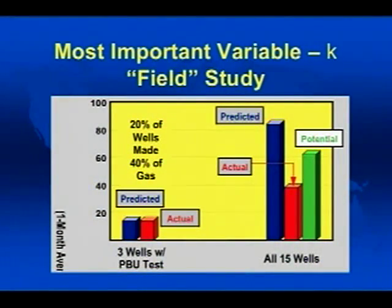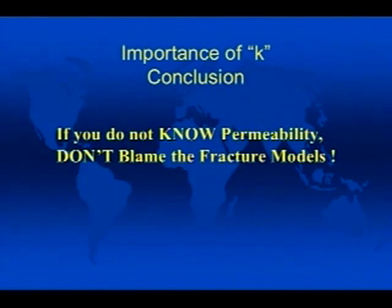That says 20% of the wells made 40% of the gas. The five wells where we had a pre-frack flow predicted about 21 million cubic feet per day post-frack, and actual was around 20 — we pretty well achieved our goals. The three wells where we knew permeability, the actual and predicted were identical. A quick study found: if I kept total proppant volume the same but redistributed it — shorter fatter fracks for high-permeability wells, bigger fracks for low-permeability wells — those 15 wells had the potential to make 62 million cubic feet a day, a 50% improvement in fracturing effectiveness. If you do not know permeability, don't blame the fracture models for your lack of success.